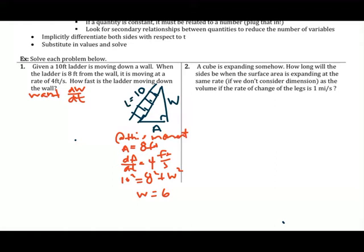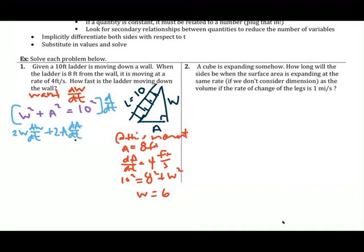The relationship we use is the Pythagorean theorem: W squared plus A squared equals L squared, or 10 squared. We use 10 as a constant because the ladder length isn't changing. Now we implicitly differentiate with respect to t, giving us 2W dW/dt plus 2A dA/dt equals 0.